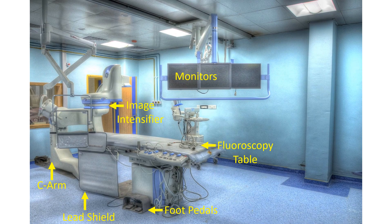The X-ray tube generates the X-rays needed for imaging. It is not visible in the picture, being below the table and behind the lead sheet. The X-ray beam passes through the fluoroscopic table and the patient positioned on the table, and is received by the image intensifier to produce the images.